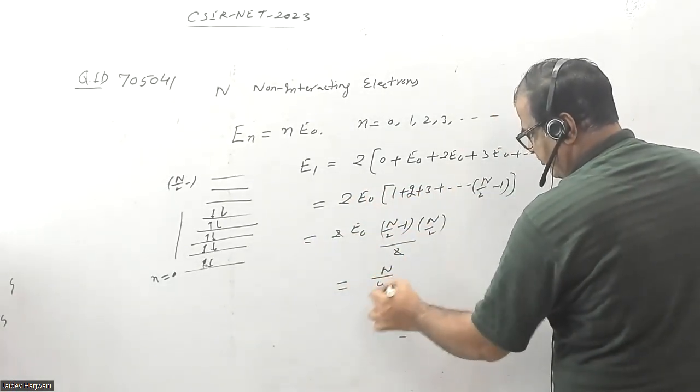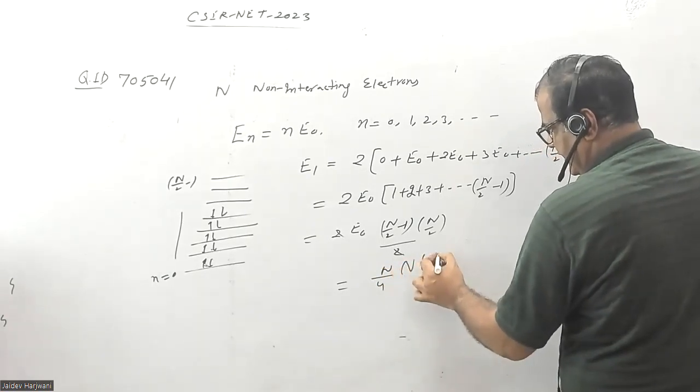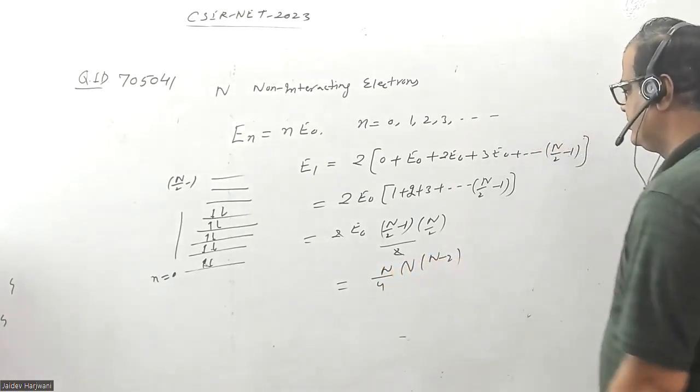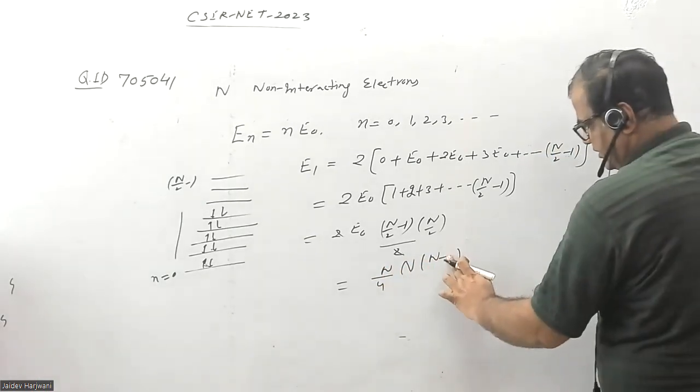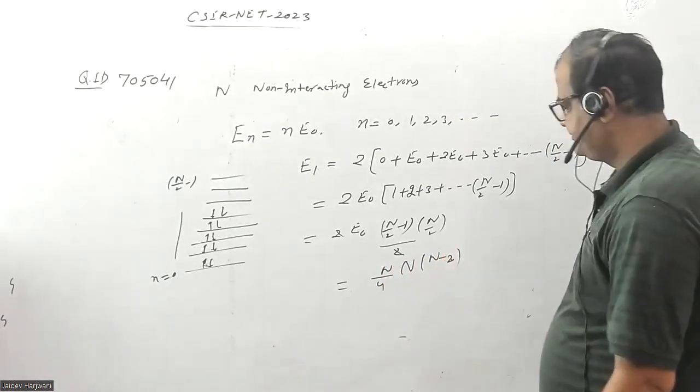This comes out to N by 4 times N times (N minus 2). So this is your ground state energy of this system.